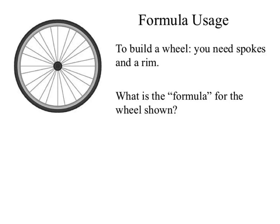Well, what is the wheel built out of? That's the tire. The wheel is that whole thing, right? So I could go through and say the wheel is WH - keep things simple. How do I build that wheel? Well, that wheel is built with a rim. What else is in that wheel? I've got spokes. I've got a tire.